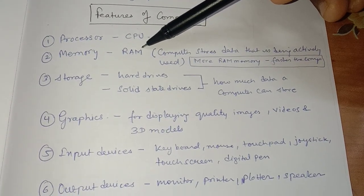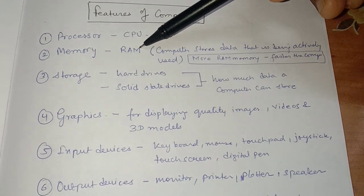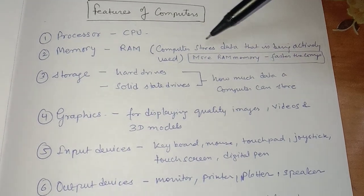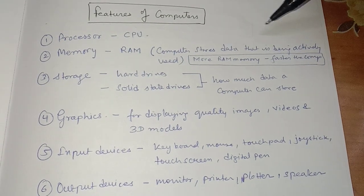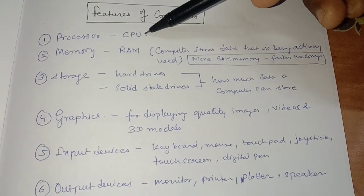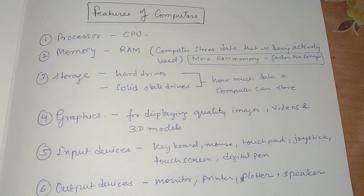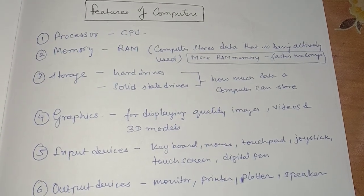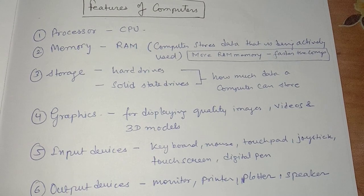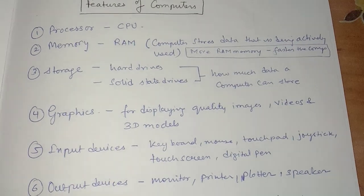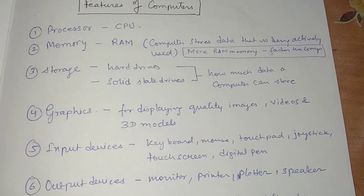Memory refers to RAM, or random access memory. The computer stores data that is being actively used in RAM. The computer cannot load all data from the hard disk at once — whatever data has to be used, it fetches from the hard disk and stores in RAM.